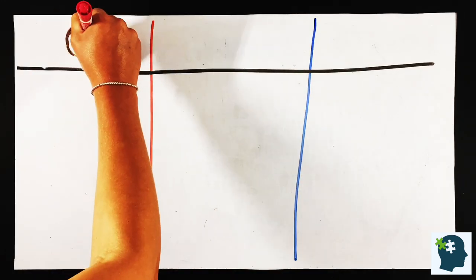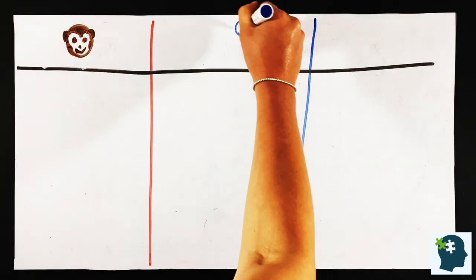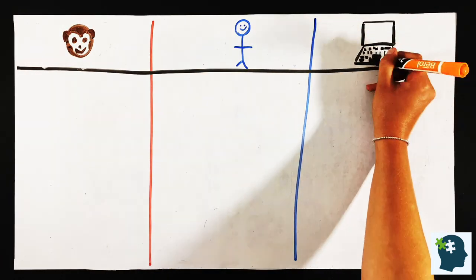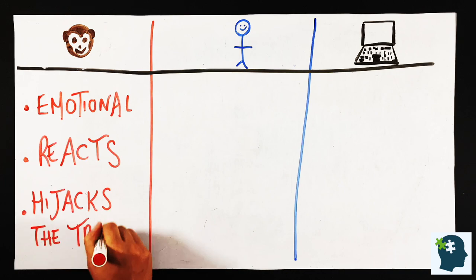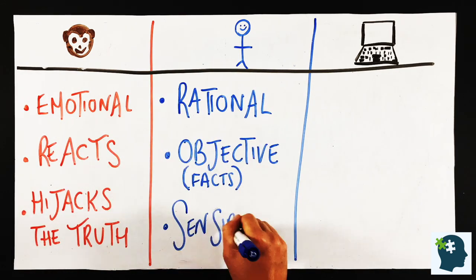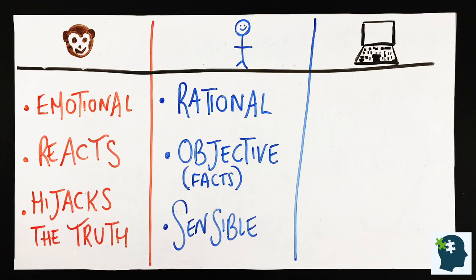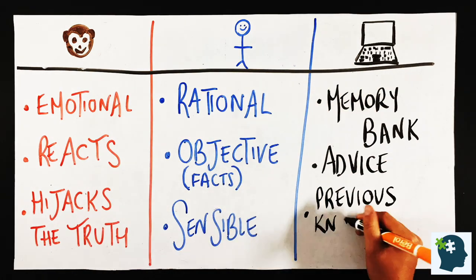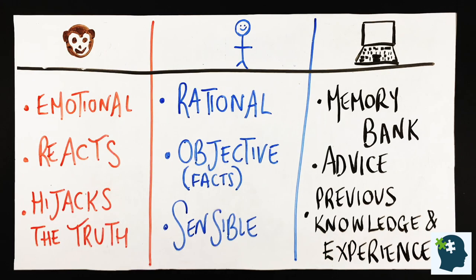So we can now recognize these three areas of our mind: the chimp, emotional, survival, reacts; the human, sensible, objective, looking at the facts, and rational; and the computer, the important advisor and memory bank.